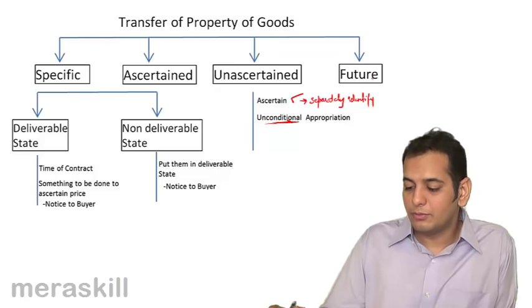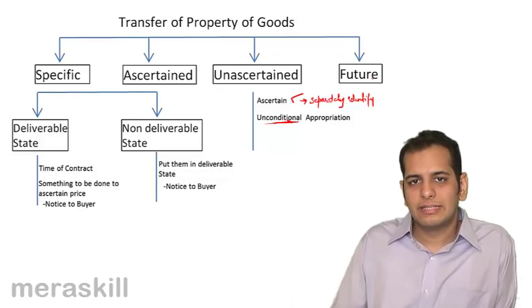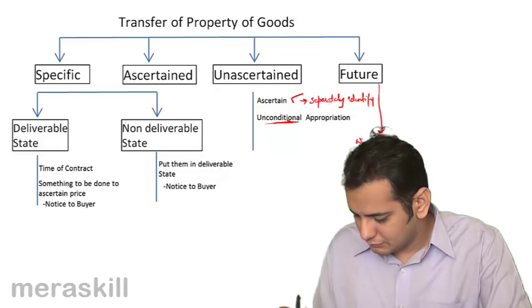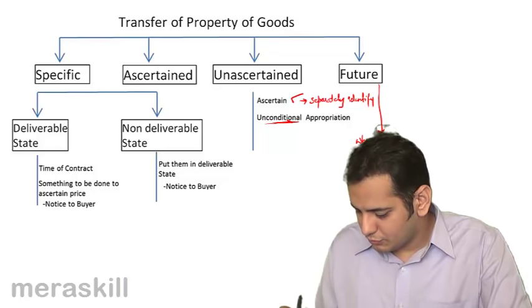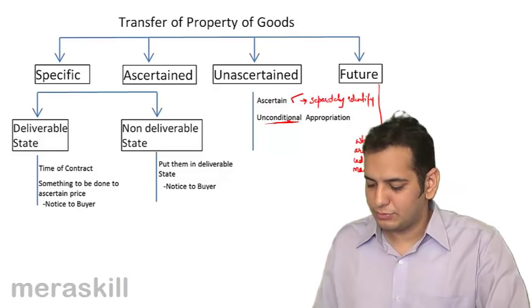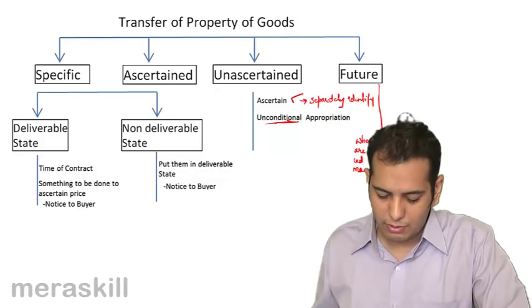What is the rule relating to future goods? The property in future goods gets transferred when they are produced or manufactured. When they will be manufactured or produced, at that point in time the ownership will get transferred.